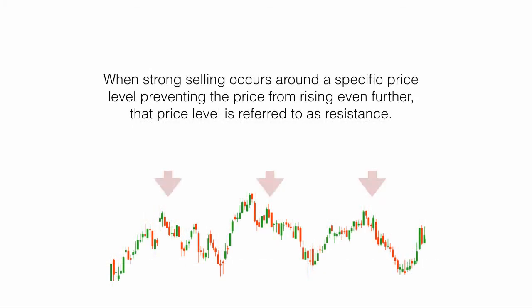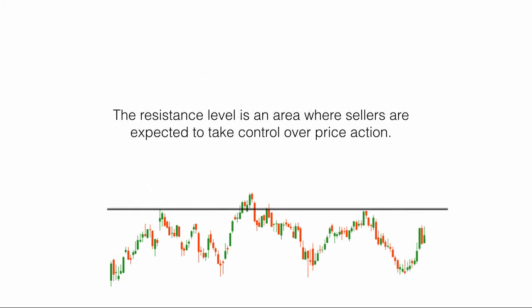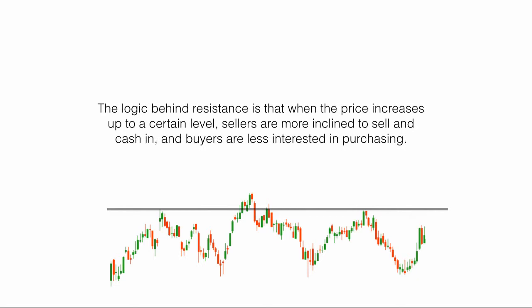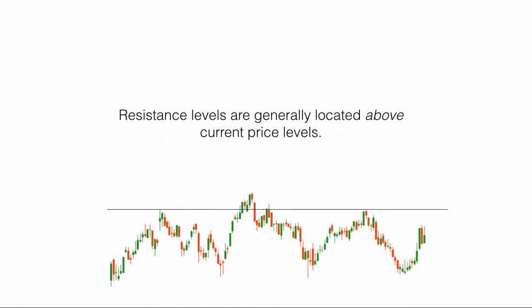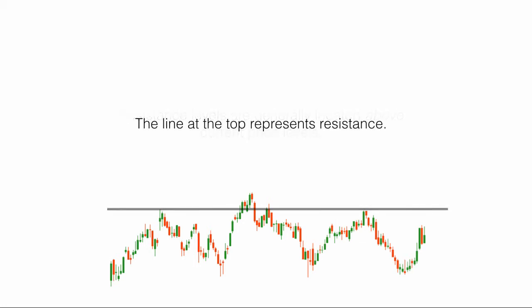When strong selling occurs around a specific price level, preventing the price from rising even further, that price level is referred to as resistance. The resistance level is an area where sellers are expected to take control over price action. The logic behind resistance is that when the price increases up to a certain level, sellers are more inclined to sell and cash in, and buyers are less interested in purchasing. Resistance levels are generally located above current price levels. The line at the top represents resistance.